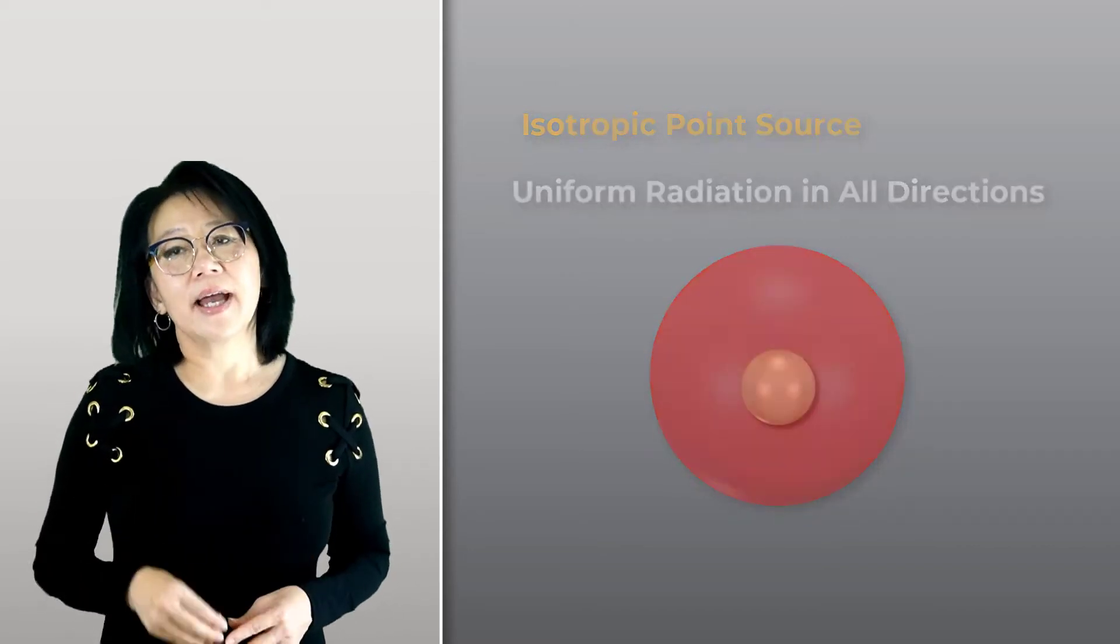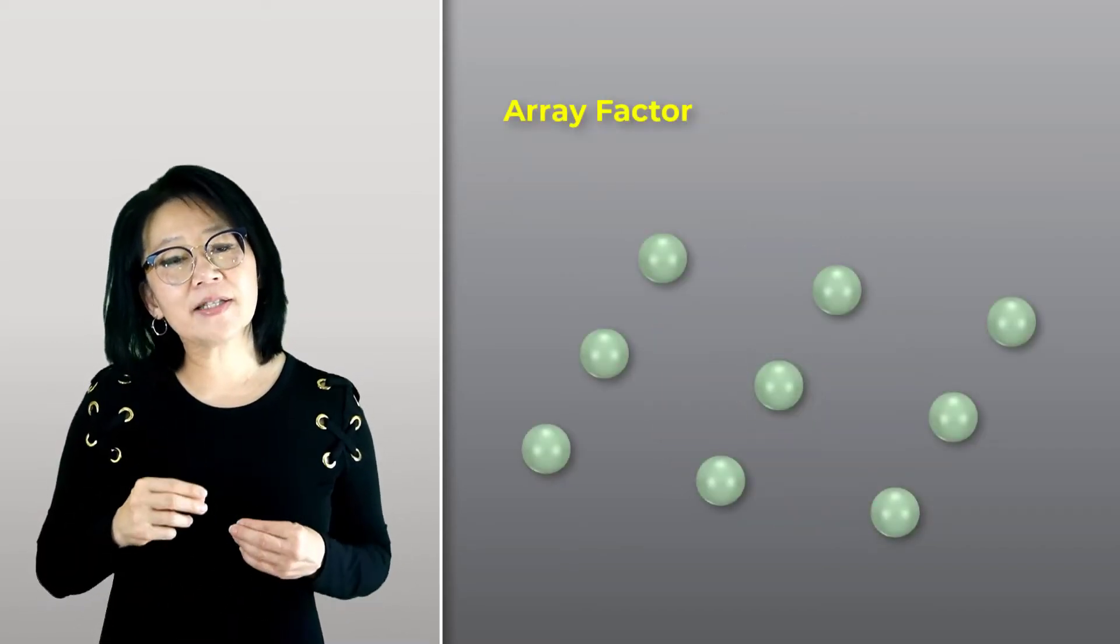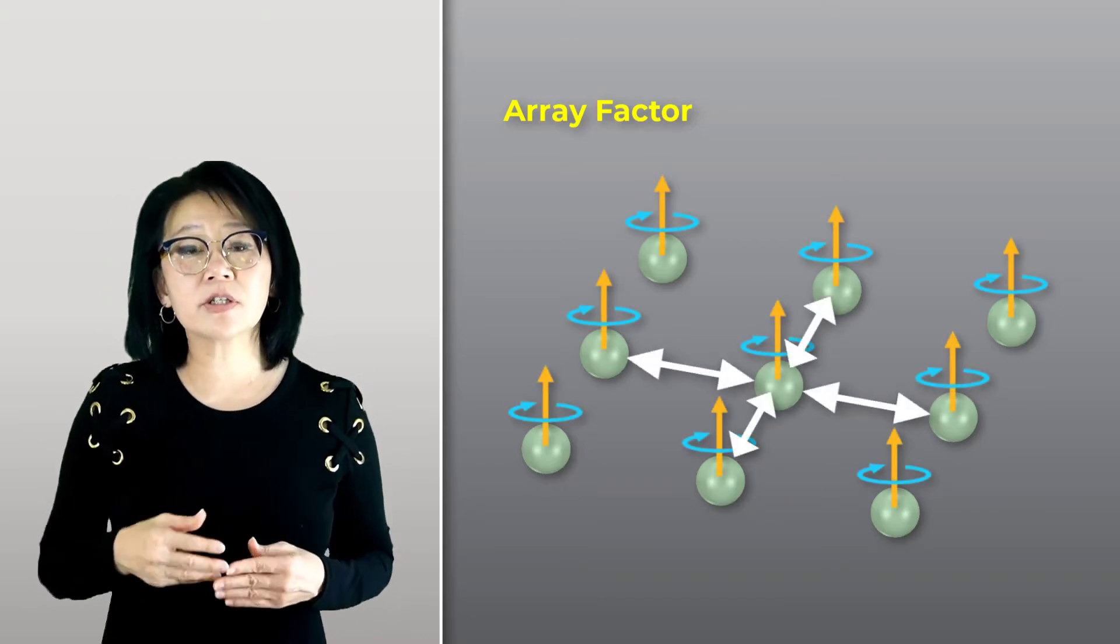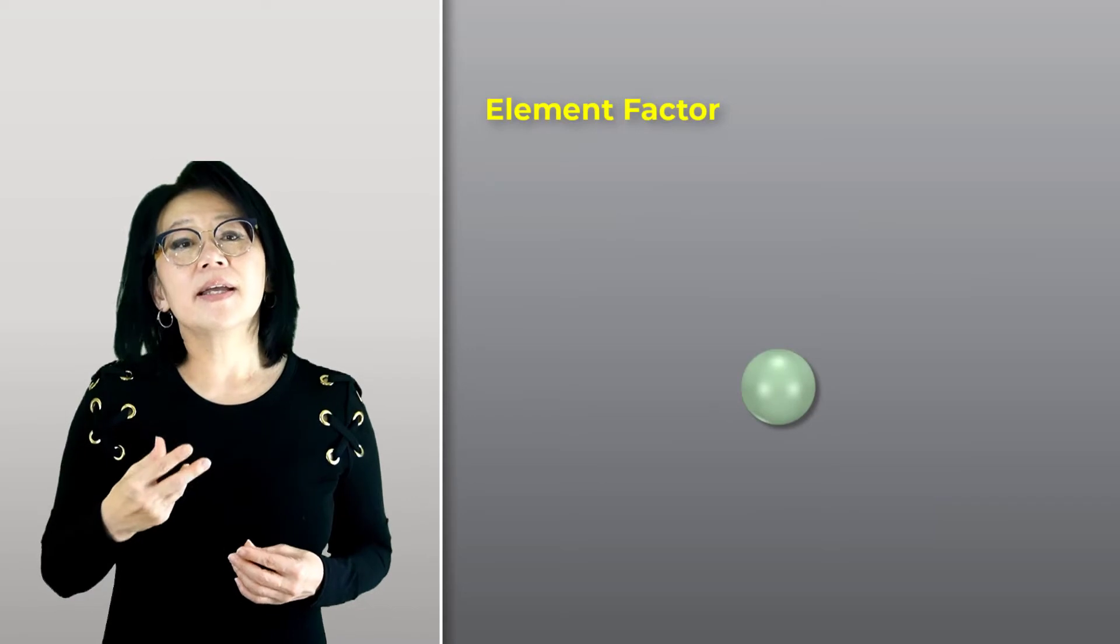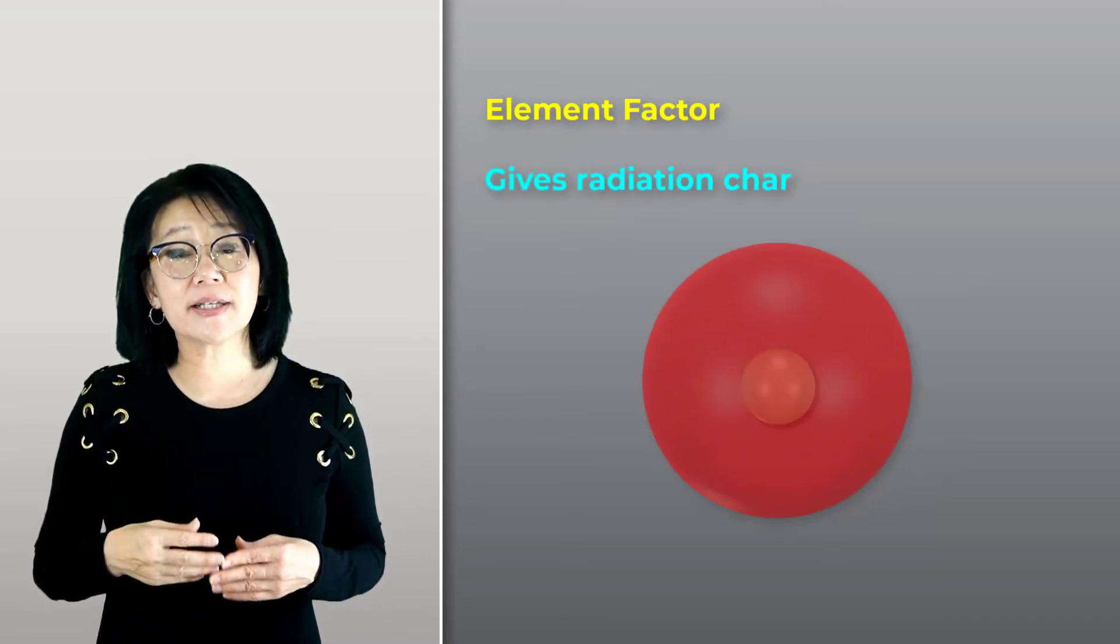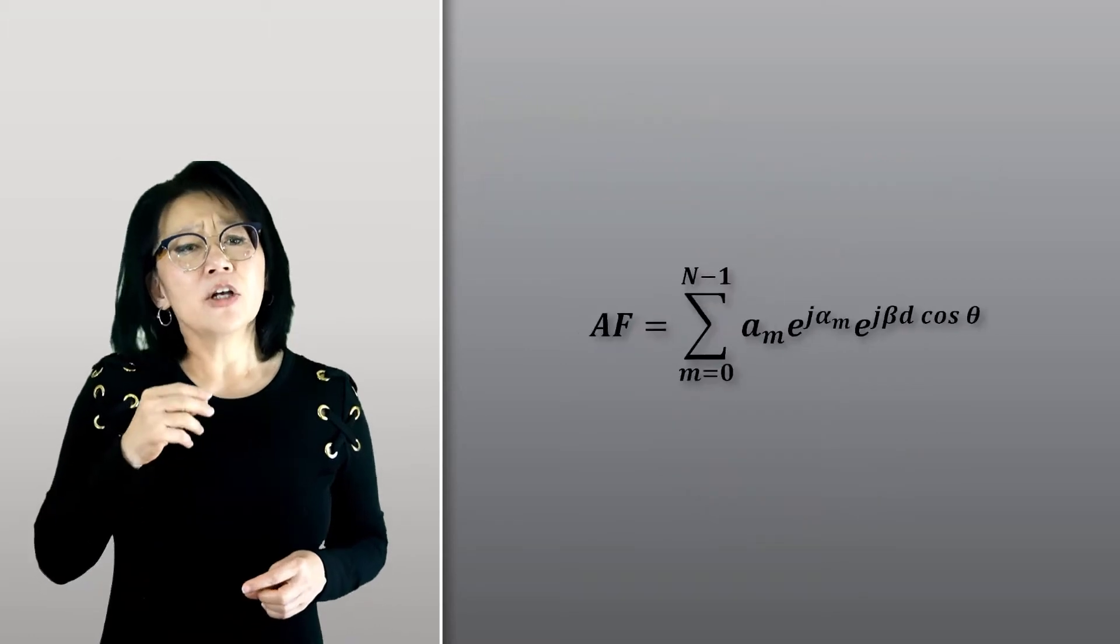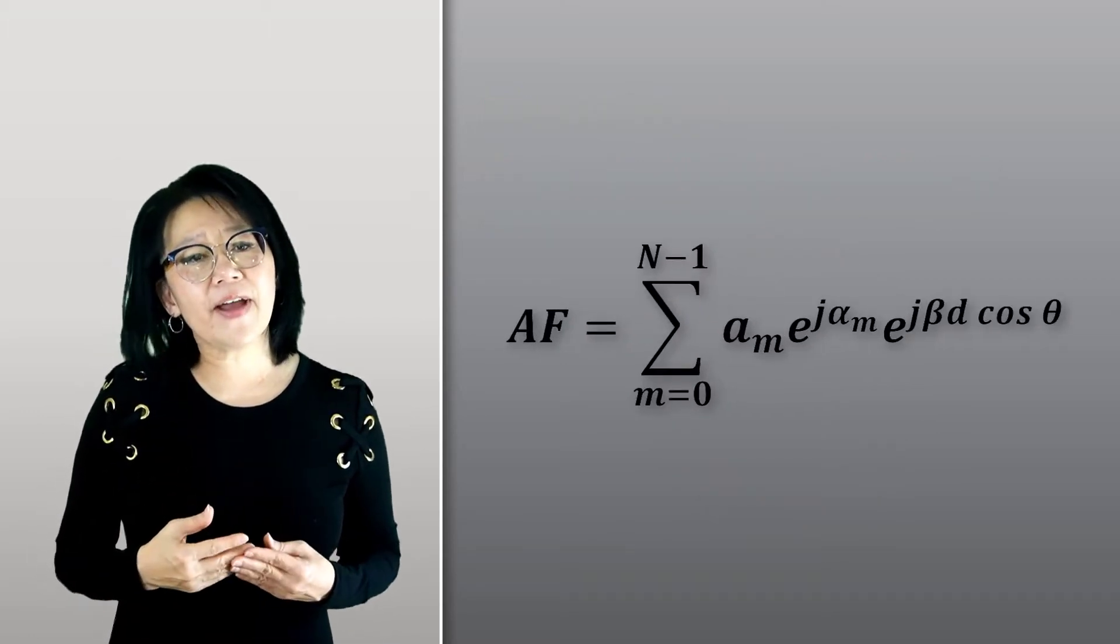The array factor provides the orientation and separation information of the point sources, while the element factor gives the radiation characteristics of that given antenna element. As we can see by the array factor equation...